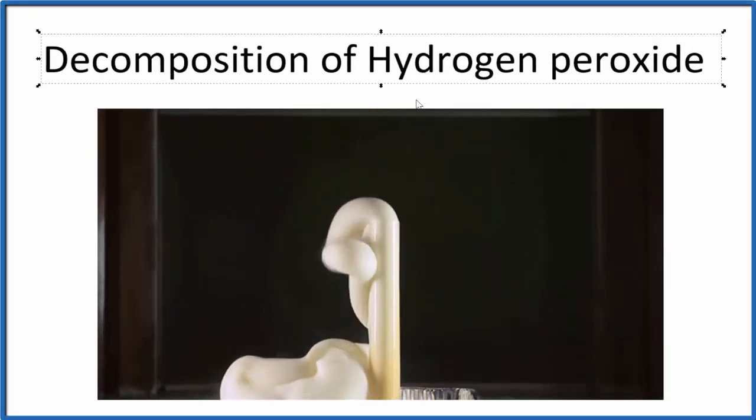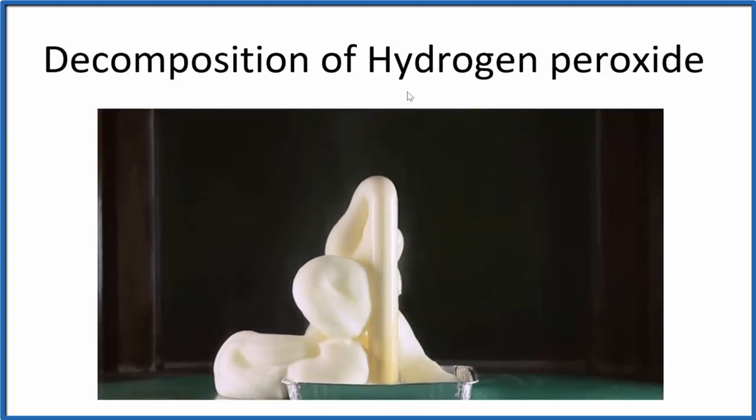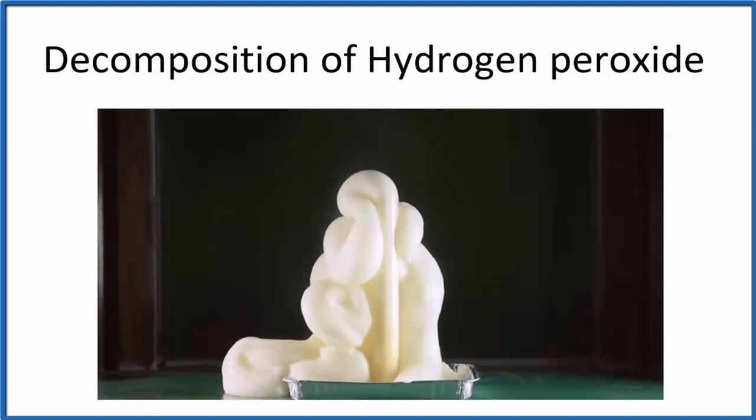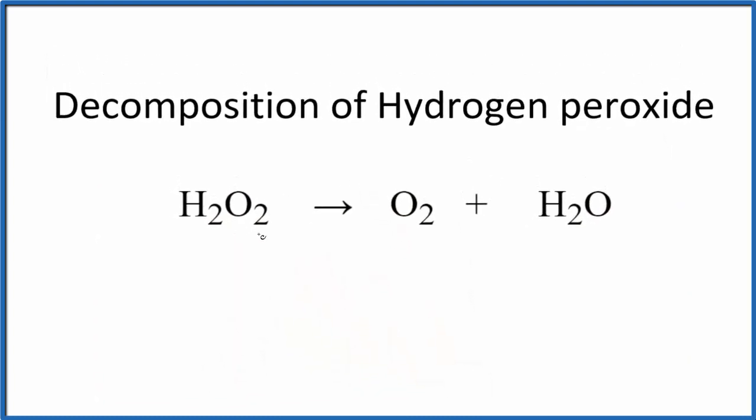Let's take a look at the decomposition of hydrogen peroxide, H2O2. So let's start off with an equation and balance it right away. We can see we have two oxygens here, but here we have two plus one, we have three in the products.